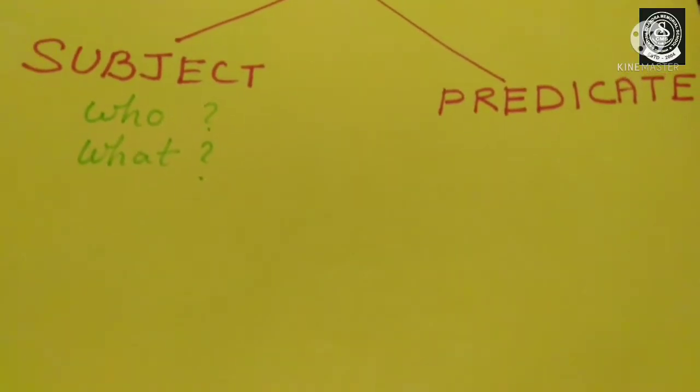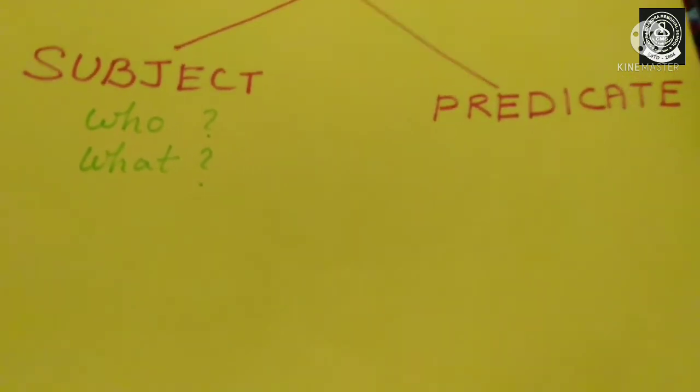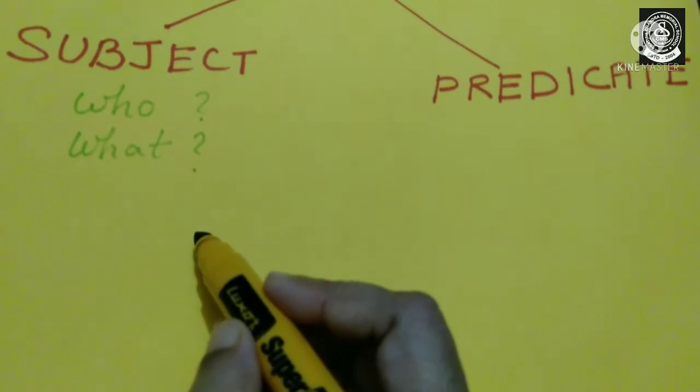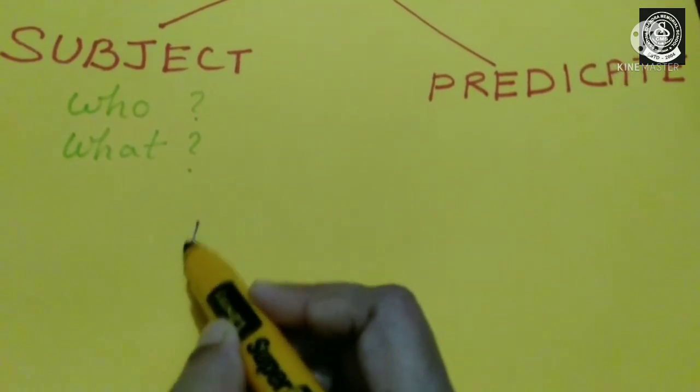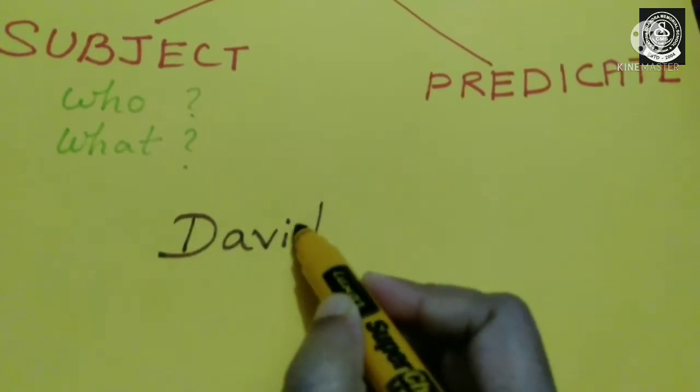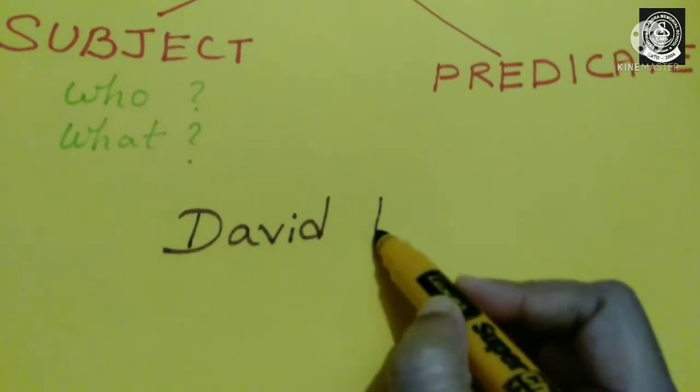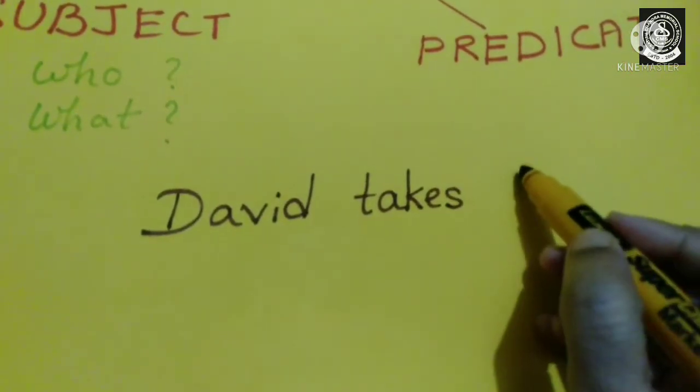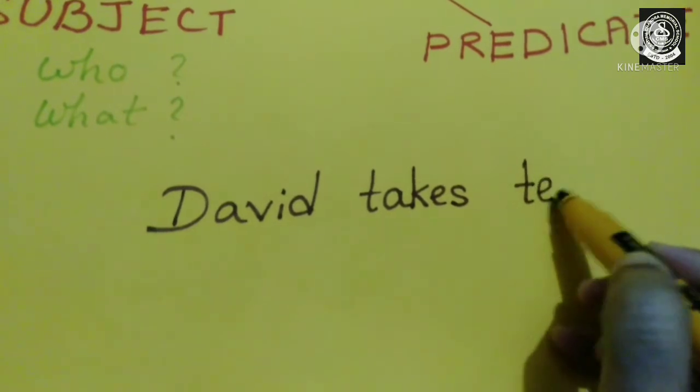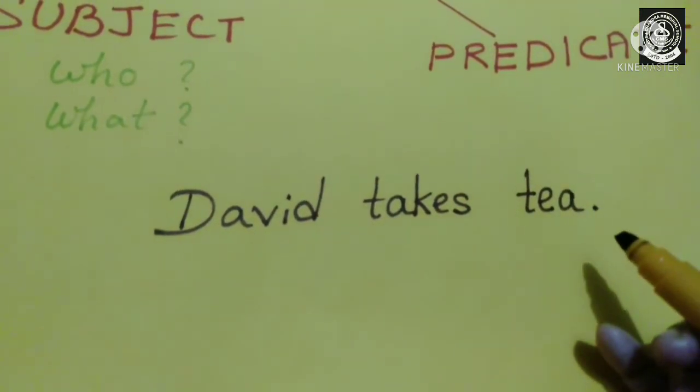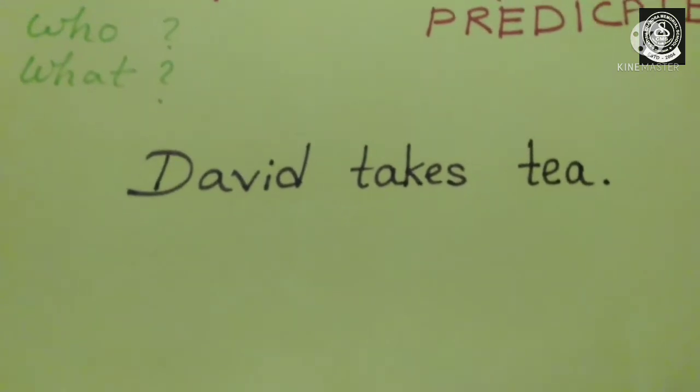Now let us try to understand this with the help of an example. Let us take the example of this sentence. David takes tea. Don't forget to put up full stop. David takes tea.